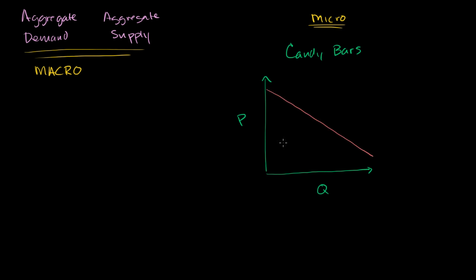There are multiple ways to interpret the downward sloping demand curve. At a high price, people say, why should I buy this candy bar? I could buy other things with that money that would make me just as happy. At a low price, people say this is a pretty good deal — candy bars are cheap, so I'll buy a bunch instead of lollipops or ice cream. The other way to interpret it is as a marginal benefit curve: those first few units have a high willingness to pay, but as you have more and more units, the incremental benefit gets less and less.